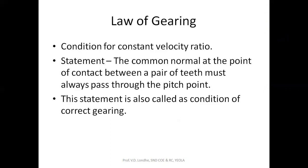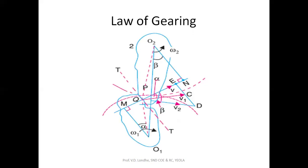pitch point. This is also called the condition for correct gearing. In this gear pair, gear two and gear one are shown, with O2 and O1 as the respective centers. The first and second gears have respective angular velocities omega one and omega two.